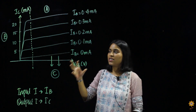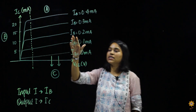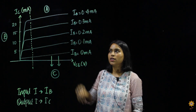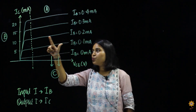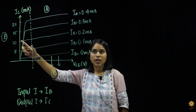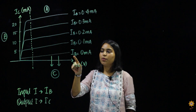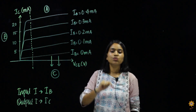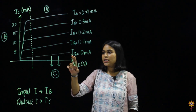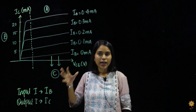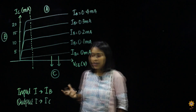We can see there is definitely some kind of amplification happening here. Again, for IB equal to 0.2 milliamps, the output current is 10 milliamps — again a lot of amplification. Also, when the input current IB is equal to 0 milliamps, when there is no input current present, you can see there is still a certain slope here, meaning there is some current present on the output side. Let's see what that is.